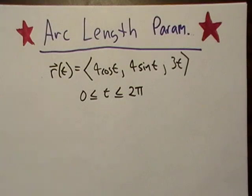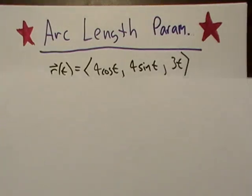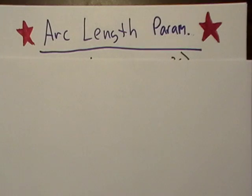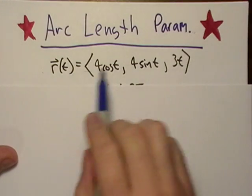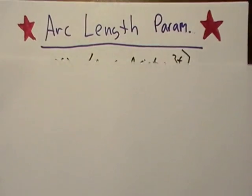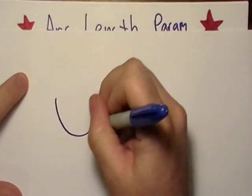Okay, so this is some arc length parameterization. The first thing we need to kind of look at... Well, okay, so here's, let's remember what this does. This describes a space curve over time, okay, and I don't know exactly what it looks like.